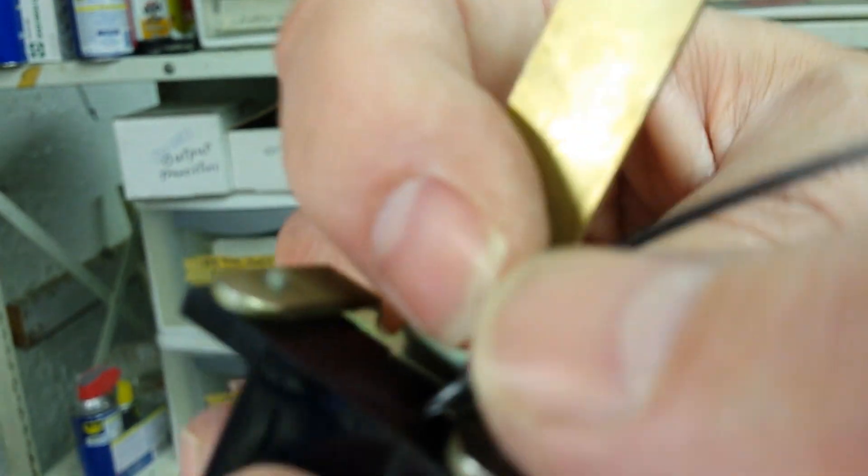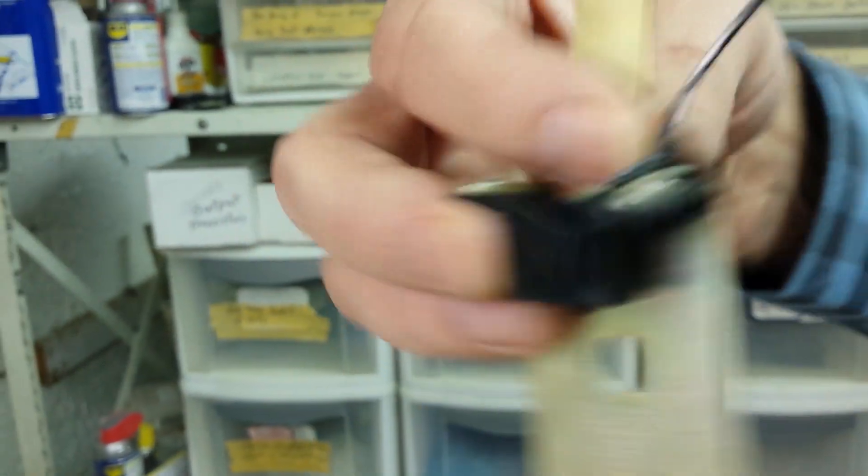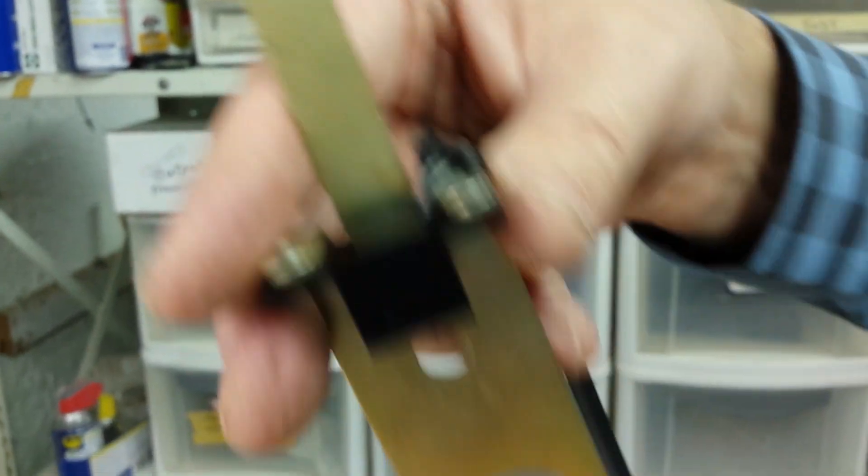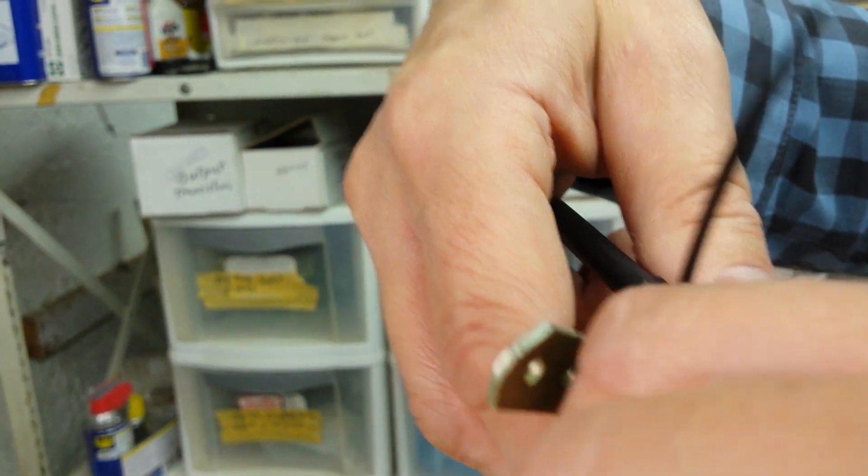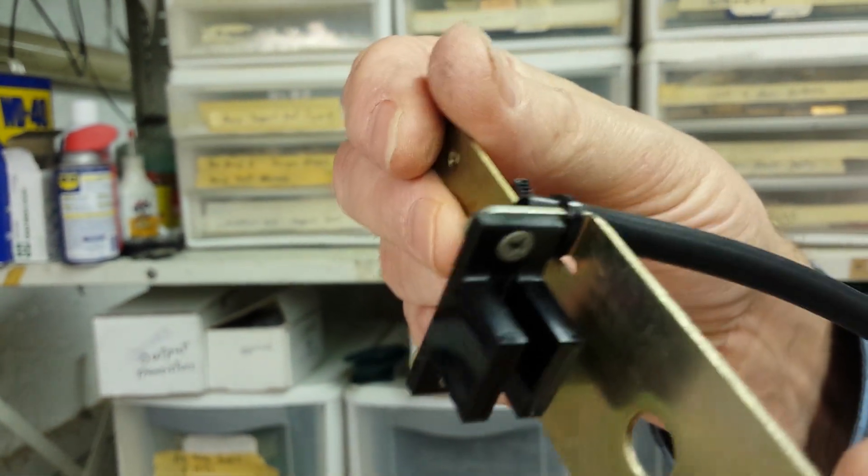Once you do that, you can go ahead and tighten it. Now you can tighten it with your fingers like this, and that's good enough. Or you can take a little pair of pliers of some sort and just put a little more tension on it, like that. Once you've done that, all you have to do is cut it. So that's how you properly mount a new optical switch to its bracket.